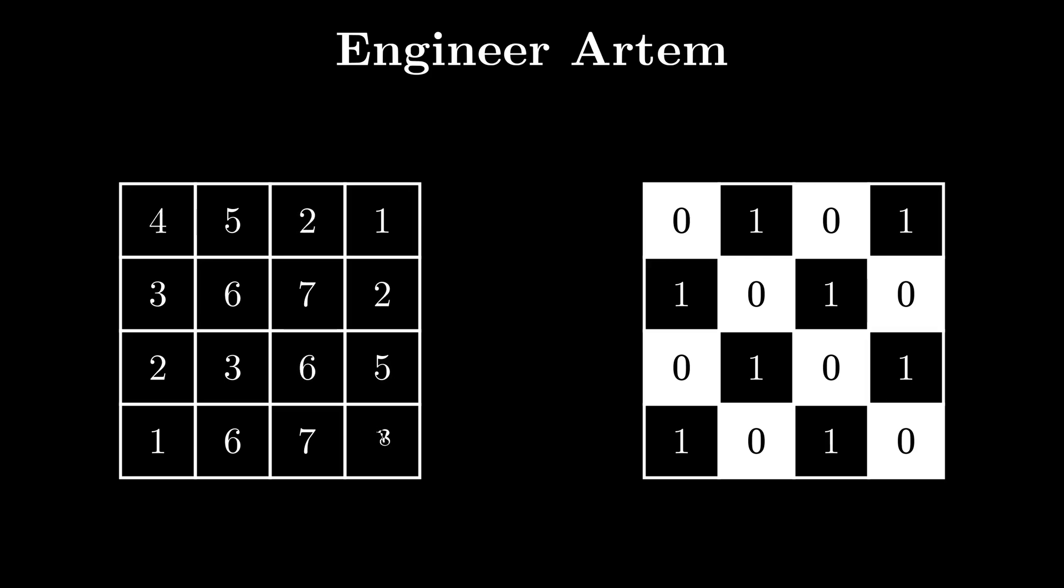Hence we end up with a grid where adjacent cells don't have the same number as black cells are odd and white cells are even. Thus, odd cells are only adjacent to even cells, while even cells are only adjacent to odd cells.